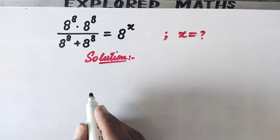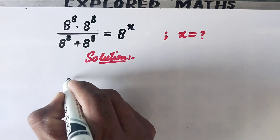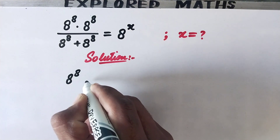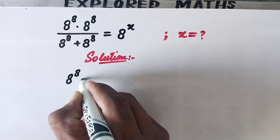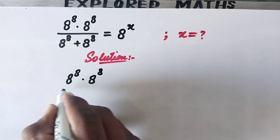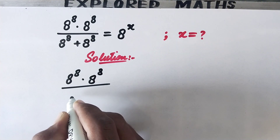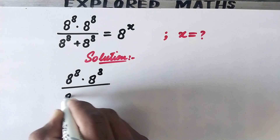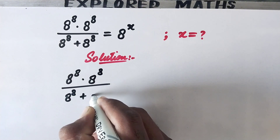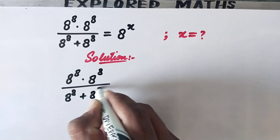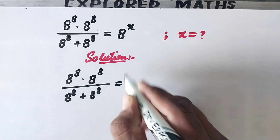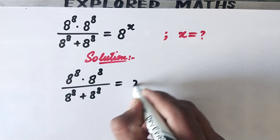So here in the first step we will write it in this way: 8 to power 8 times 8 to power 8, divided by 8 to power 8 plus 8 to power 8.